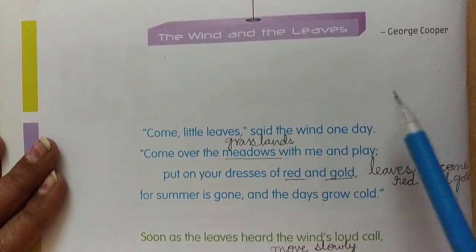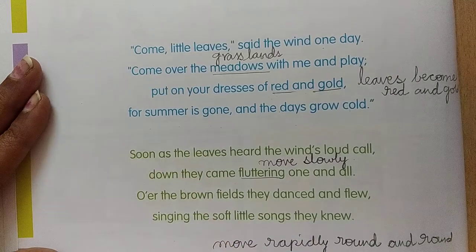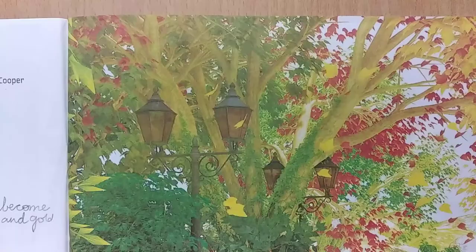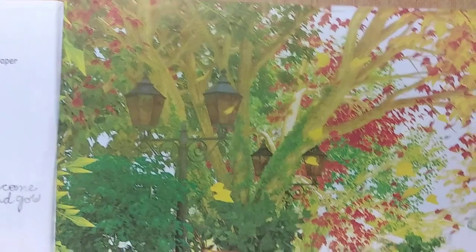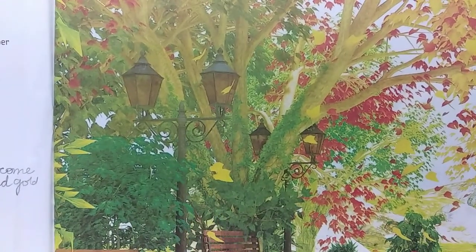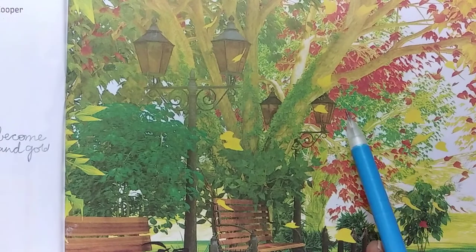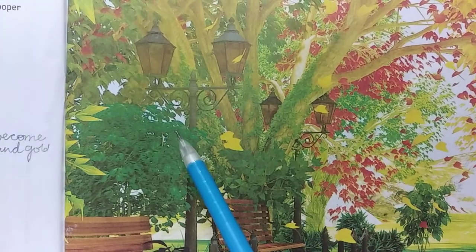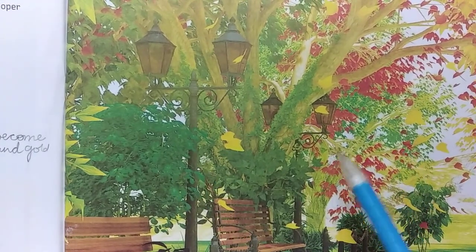Let us see. Let me show you the picture first. Look at the picture. Look at the tree — beautiful leaves, colors: yellow, red, green.